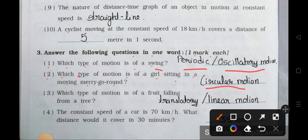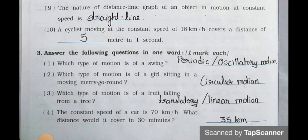Number three: which type of motion is of a fruit falling from a tree? Answer is translatory or linear motion.